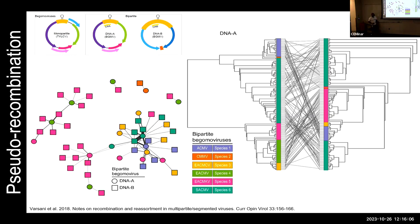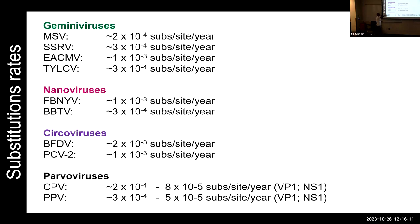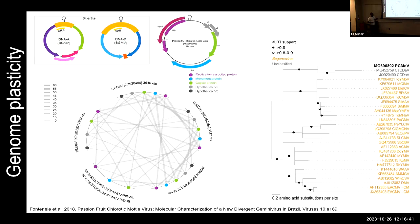Single-stranded DNA viruses have mutation rates staggeringly similar to those of RNA viruses — debunking the hypothesis that RNA viruses have higher mutation rates because they use error-prone reverse transcriptases. These genomes also show high plasticity: in one example, a bipartite molecule was incorporated into a monopartite genome, expanding genome size. Capsid proteins are flexible enough to accommodate increased nucleic acid size, though there are limits to how much a capsid can encapsulate.